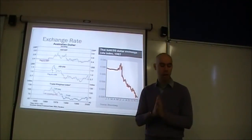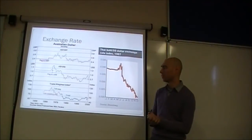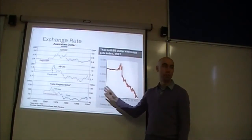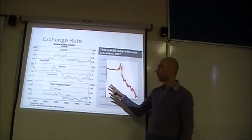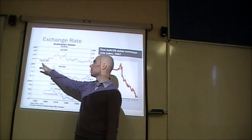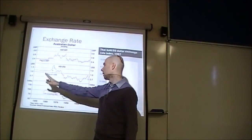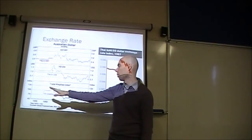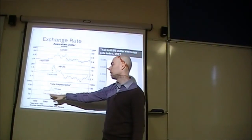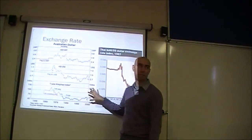There are two slides with graphs we're going to look at in terms of exchange rates. The first one we looked at when we did exchange rates — it is the long-term history of Australia's exchange rate. What I want you to look at is the three sections. First is the fixed exchange rate to the pound. Second is the fixed exchange rate to the US dollar. And third is the fixed exchange rate to the trade-weighted index. After that, it's been floated.